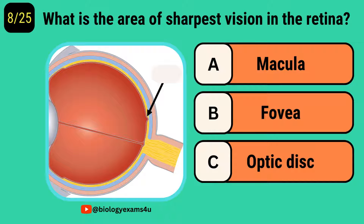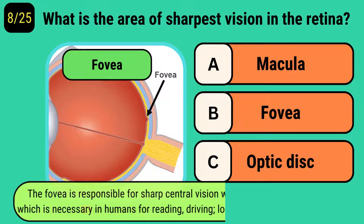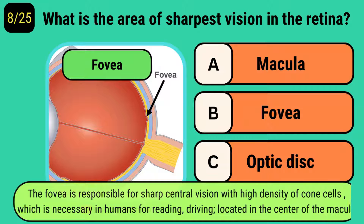What is the area of sharp central vision in the retina? The answer is fovea. It is responsible for sharp central vision with a high density of cone cells, which is essential in humans for reading, driving, etc. It is located in the center of the macula.